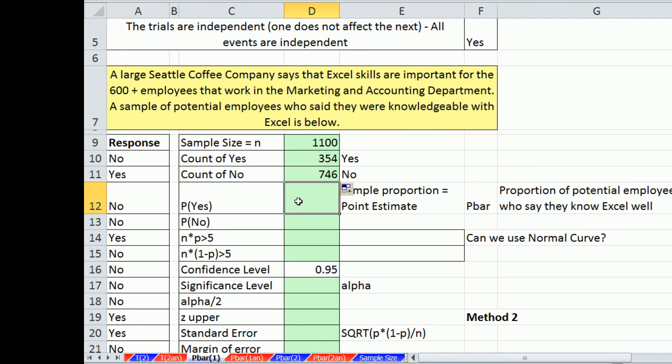All right, now the probability. We have our total number in the sample, our number of successes. So we'll do equals the number of people that responded yes divided by the sample size. Now I'm going to lock this with the F4 key so I can copy this down. The blue box is on the yes. When I copy it down, the blue box will move down to no.